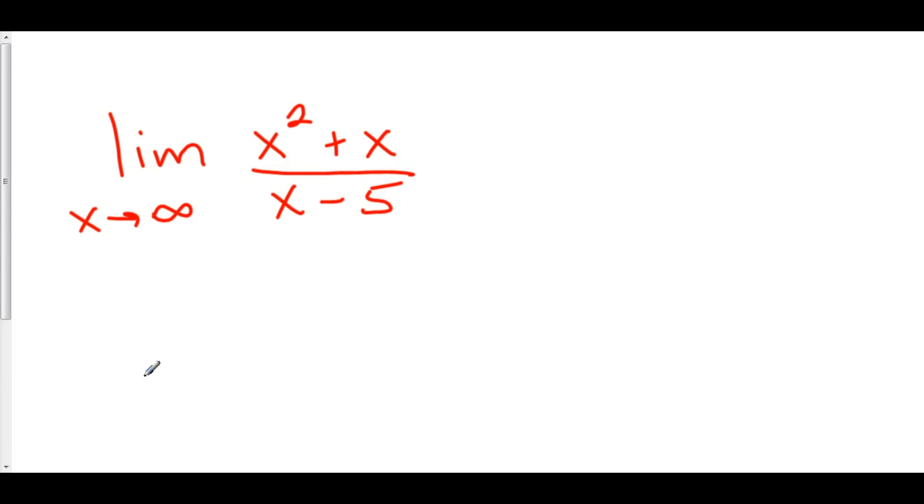Consider the limit as x approaches infinity of x squared plus x over x minus 5. Well, here, x squared is expanding to infinity much, much quicker than x. Even though x is going to infinity, it's still a grain of sand compared to the magnitude of x squared that is right next to it. This x squared is increasing so much more rapidly than x that x actually gets swallowed by that expansion.